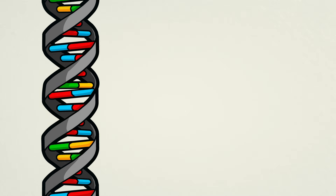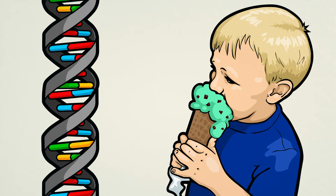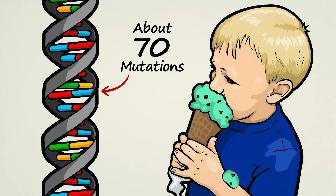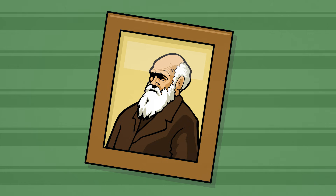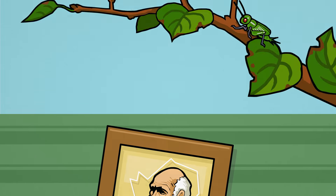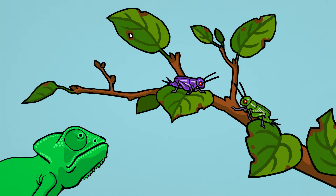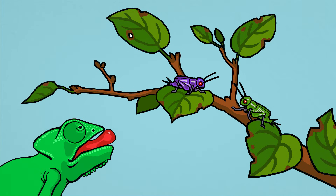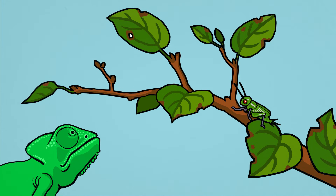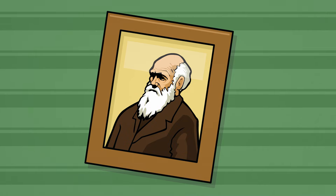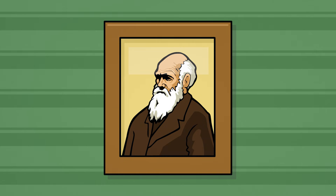Current studies suggest that in humans, every child born has roughly 70 unique point mutations. Most mutations are completely neutral, but if one happens to land in a sensitive spot of genetic code, it often has a negative effect on a creature's ability to survive and reproduce. Natural selection usually takes care of these negative mutations by simply removing them from the gene pool. On rare occasions, beneficial point mutations occur.